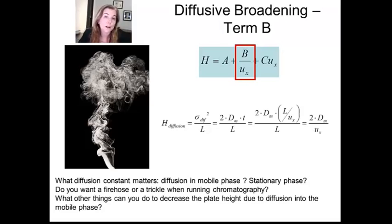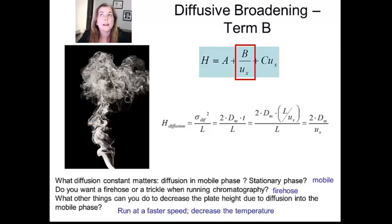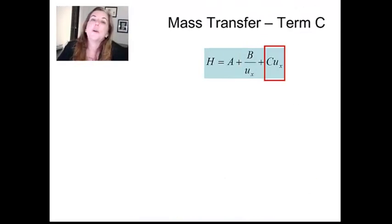So when you look at these equations, think through how could I make H small given what I'm looking at in terms of the physical relationships. In this case, what's going to matter is diffusion into the mobile phase. You're going to want to run like a fire hose. You're going to want to run a separation really, really fast to minimize diffusive broadening. And another interesting thing you can do is if you lower the temperature or increase the mass of the mobile phase atoms, you can actually cut down on that diffusion mobility.